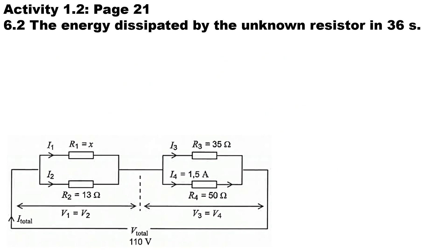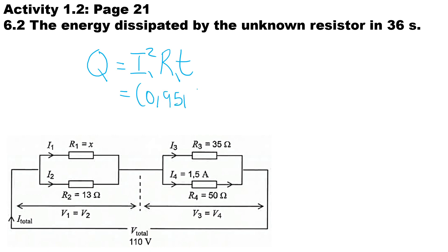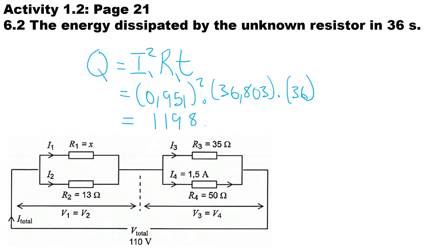The second question asks us to calculate the energy dissipated by the unknown resistor in 36 seconds. Using Joule's law, energy equals I² × R × t: 0.951 squared, times 36.803 ohms, times 36 seconds, gives us 1198.248 joules. Thanks very much for watching this video.